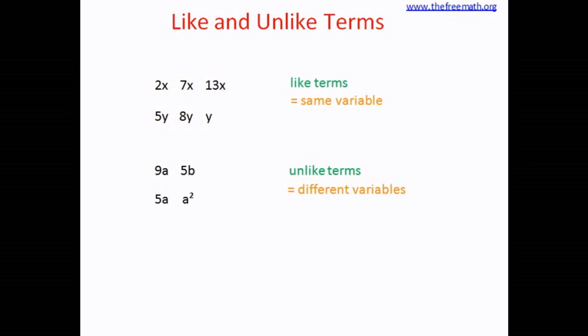So what we understand is that for the terms to be like terms not only the variable should be the same but the power of the variable should also be the same. That means when there are the same variables with the same power then the terms are called as like terms. That means 5a and a square are unlike terms.